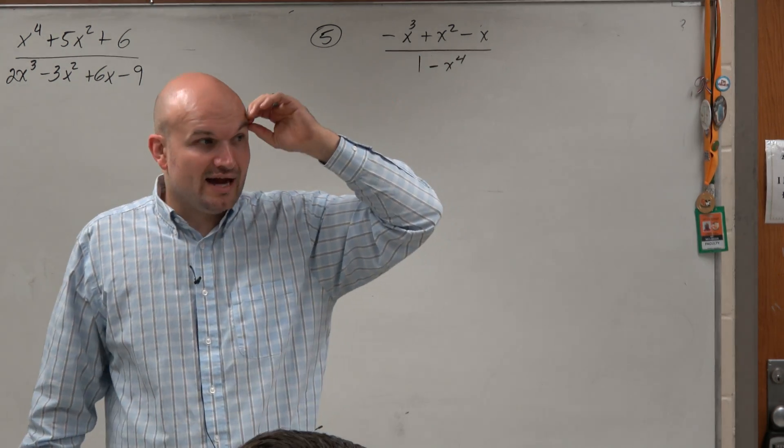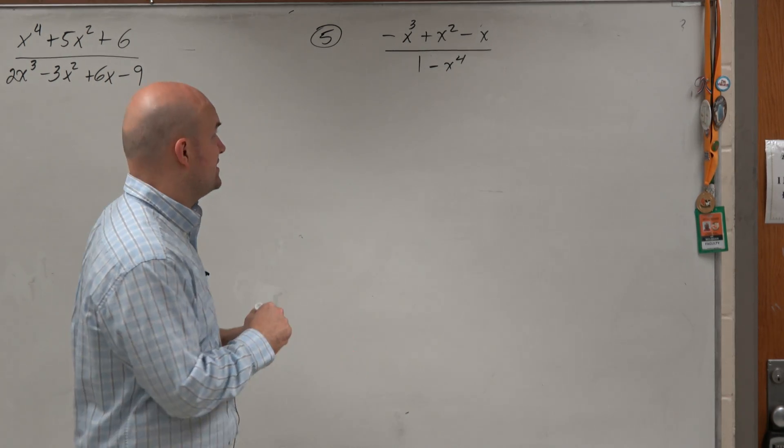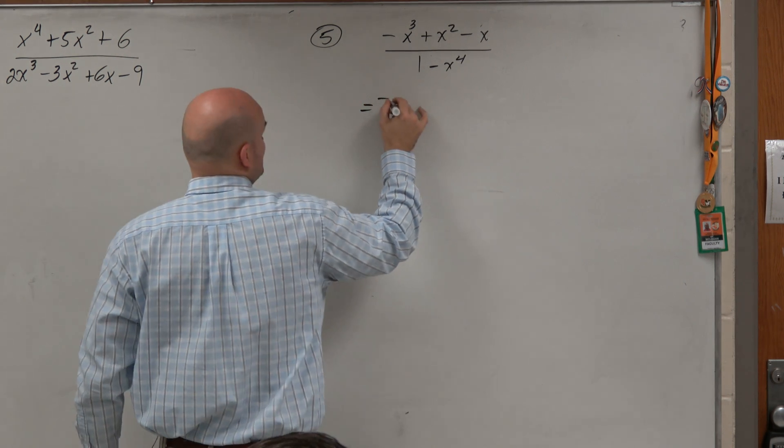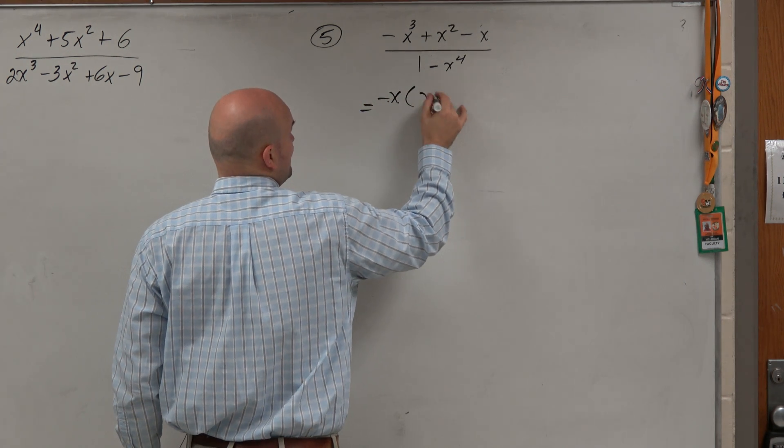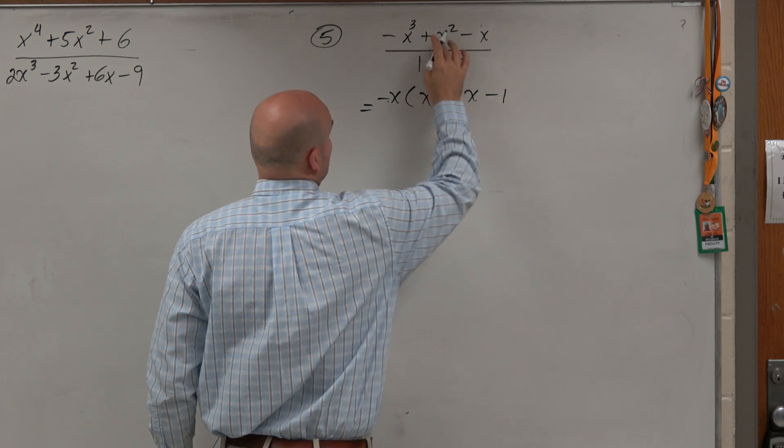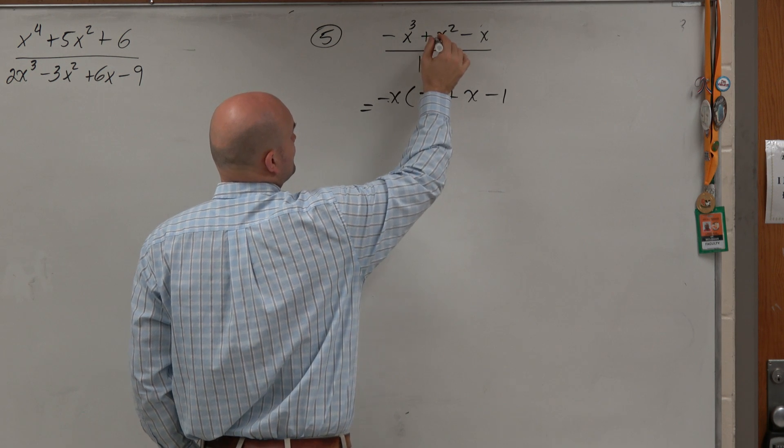The other thing I notice is I really don't like dividing when the first term is negative. So I'm going to factor out a negative as well. In this first term I'm going to factor out a negative x. That leaves me with a positive x squared plus x minus 1. And that's not correct. That's supposed to be a 2.